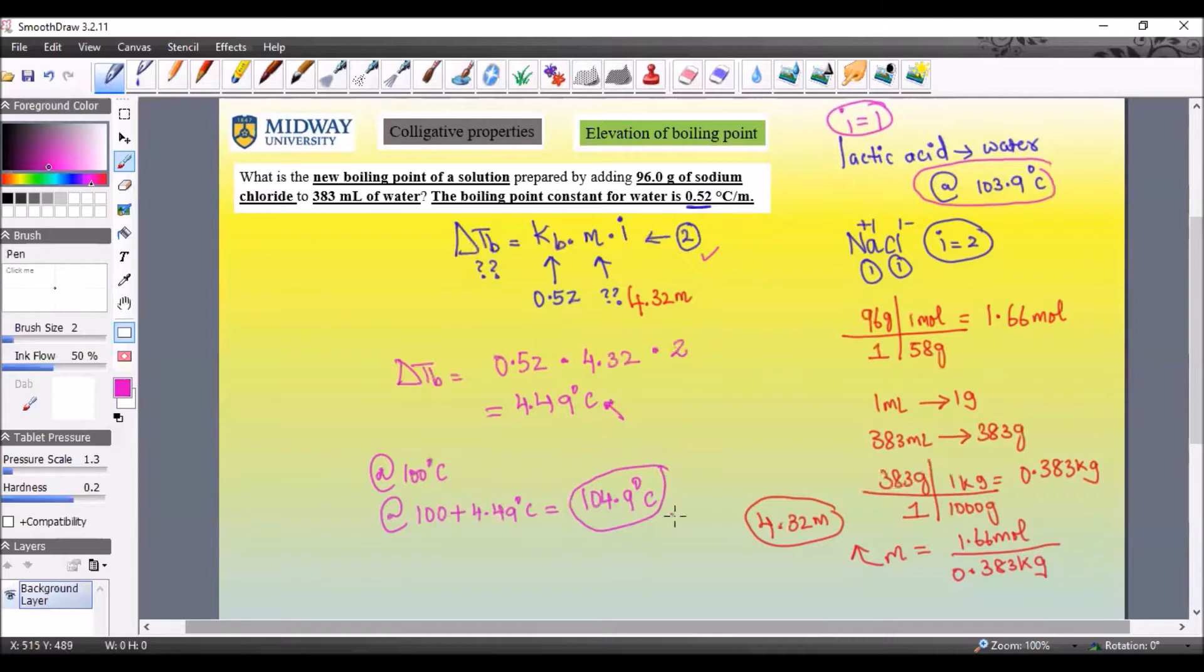So when Van't Hoff factor increases, this value right here increases, which means when you add it to 100 degrees it's going to go up. We're not technically comparing apples and apples since the previous case had cyclohexane, but either way, this value is clearly higher. This was 3.9 and here it's 4.49.